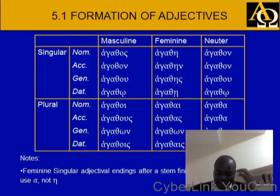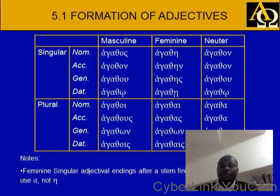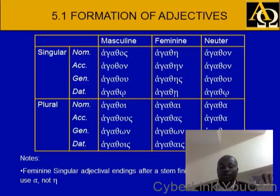The feminine singular adjective endings: when the stem finishes with a vowel or rho, alpha is used rather than eta. If you know the endings for the masculine, feminine, and neuter nouns that we have already learned, this should not be a problem for you. Because we already know kurios, we already know arke, we already know argon, which declines very much like these words.